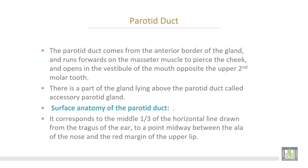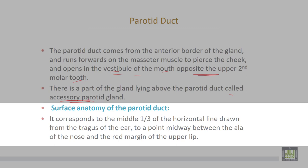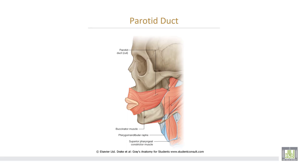The parotid duct comes from the anterior border of the gland and runs forward on the masseter muscle to pierce the cheek and opens in the vestibule of the mouth opposite the upper second molar tooth. There is a part of the gland lying above the parotid duct called the accessory parotid gland. The surface anatomy of the parotid duct corresponds to the middle third of a line drawn from the tragus of the ear to a point midway between the ala of the nose and the red margin of the upper lip.